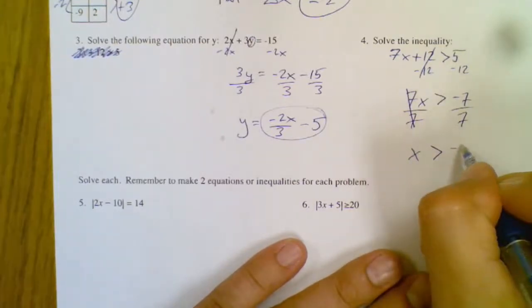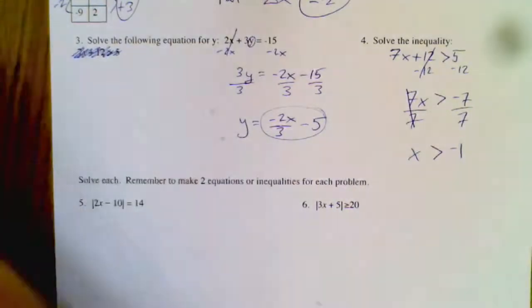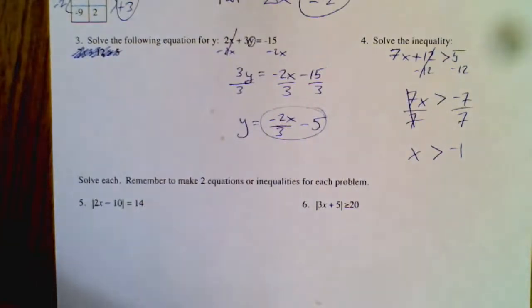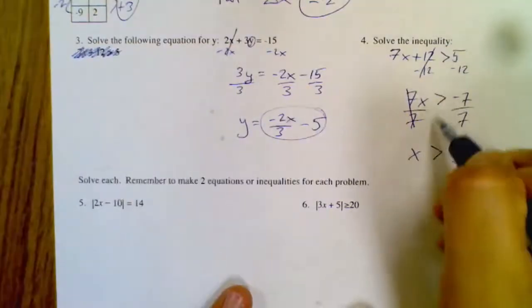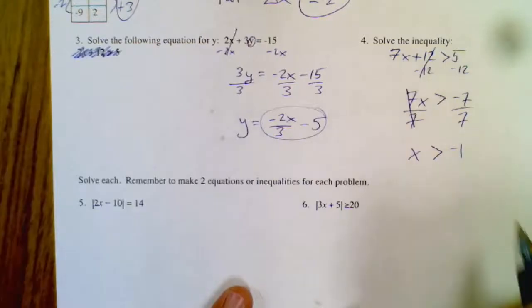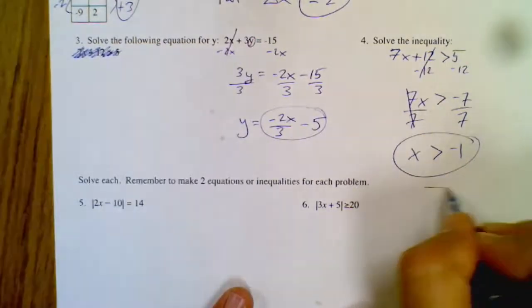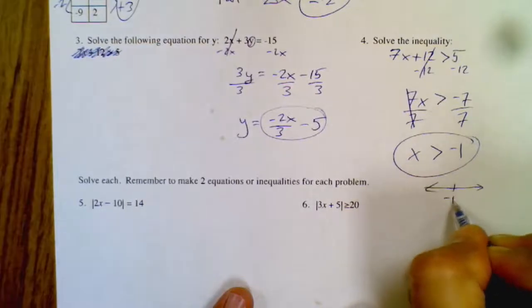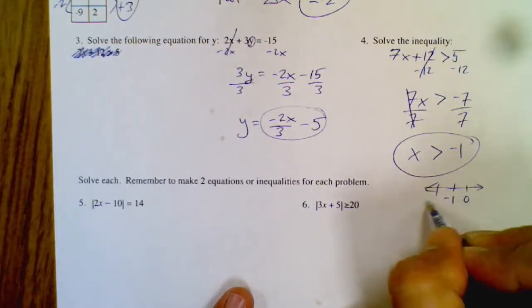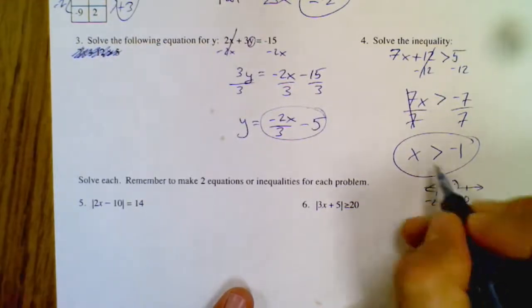Now it doesn't matter that the answer is negative, that's not a big deal. It's just when you multiply or divide by negative is the only time that symbol flips direction. So that's my answer.